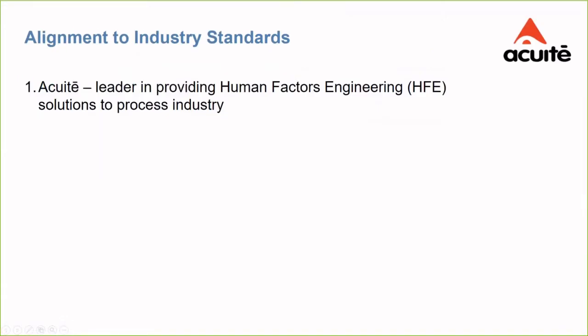CITECT engaged with a company called Acute in Perth, Western Australia, who specialized in ergonomics — which is concerned with applying scientific knowledge about human performance to create a better fit between people and technology. In addition, the symbols also needed to align with the ISA 101 standard.